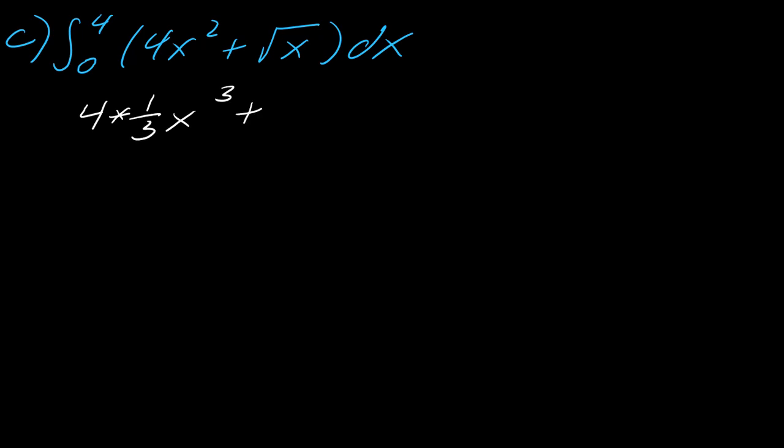So this will be 4 times one over three x cubed. And then the antiderivative of the square root of x, which is the same thing as x to the one half, this will be two thirds x to the three over two. So there's kind of all the pieces. So I still need to evaluate this from zero to four.